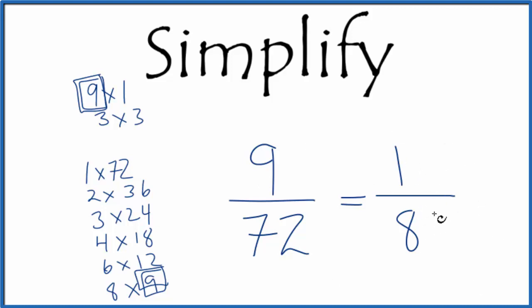It's just that 1 over 8, that's the simplified form of 9 over 72. This is Dr. B, and thanks for watching.